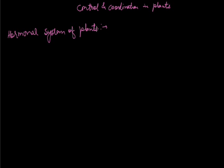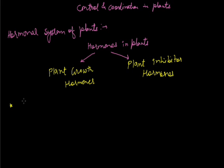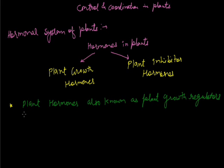Hormones of plants are known as plant growth regulators, also abbreviated as PGR. These are categorized into two categories: the first one is plant growth hormones, and the second one is plant inhibitory hormones.